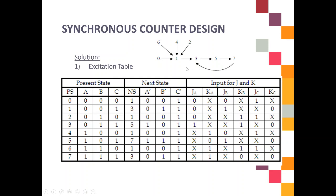Based on that, your present state has variables A, B, and C. Because you have three bits. When you have three variables, you have eight values or eight combinations of zero and one, and eight decimal numbers from zero to seven. You list them down based on the sequence. For your next state, you also need three variables: A', B', and C', plus the inputs for J and K — three pairs: JA, KA, JB, KB, JC, and KC.